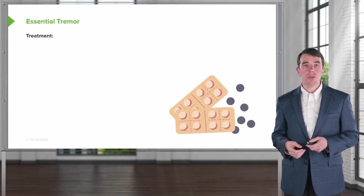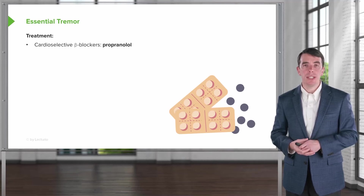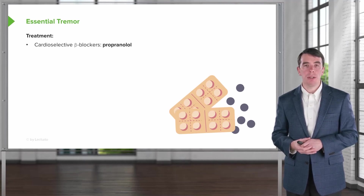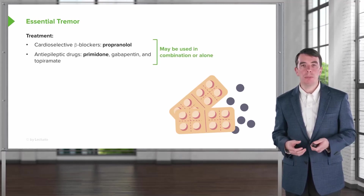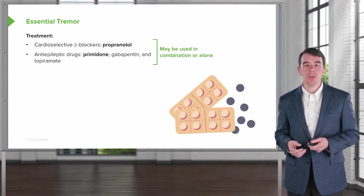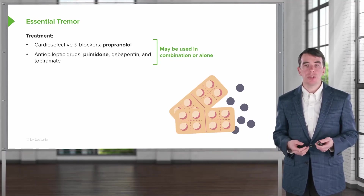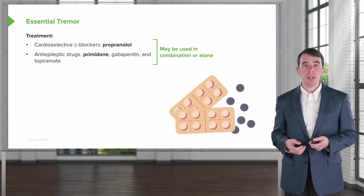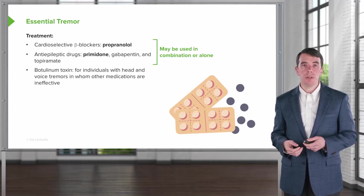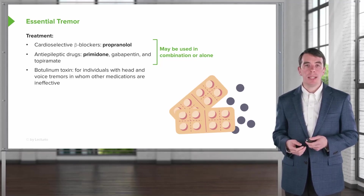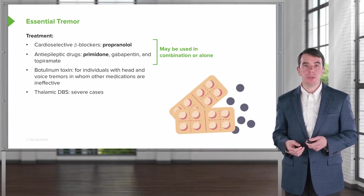To treat benign essential tremor, we can use cardioselective agents like beta-blockers — propranolol is the most common — or antiepileptics such as primidone. The goal is to reduce severity and functional impairment. Botulinum toxin can be used, particularly if there is an associated voice tremor. In particularly severe cases, thalamic deep brain stimulation may be employed.